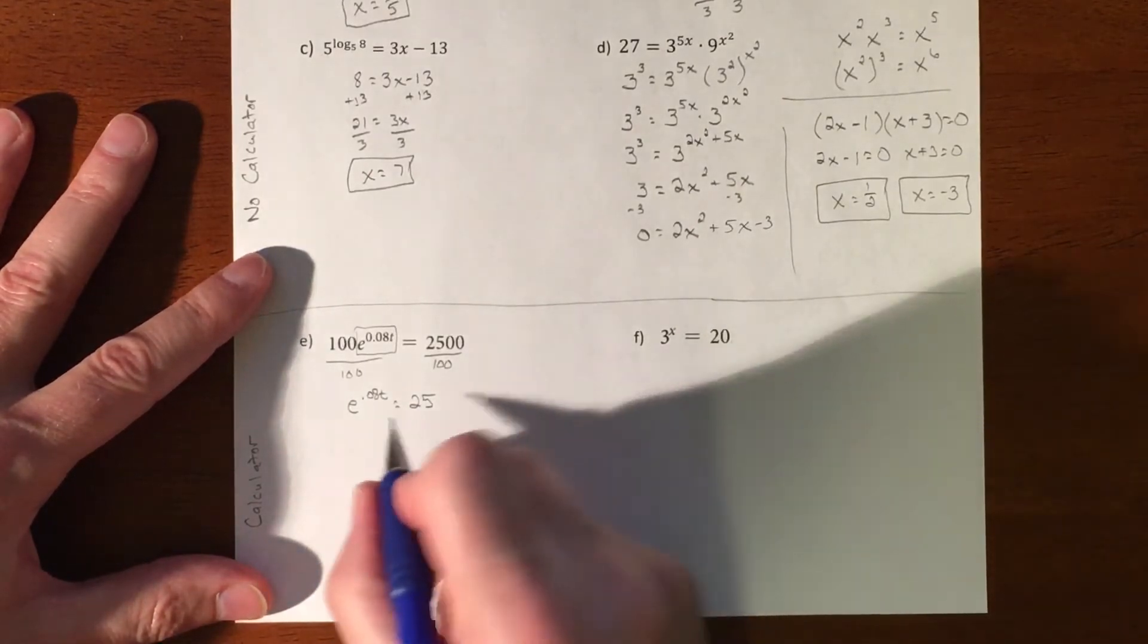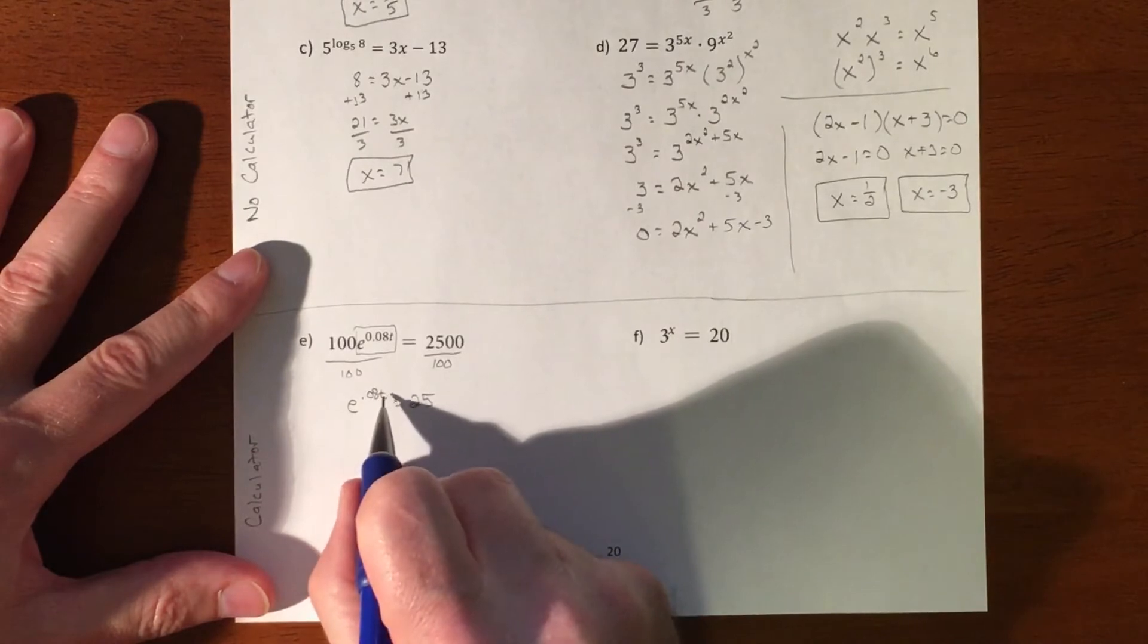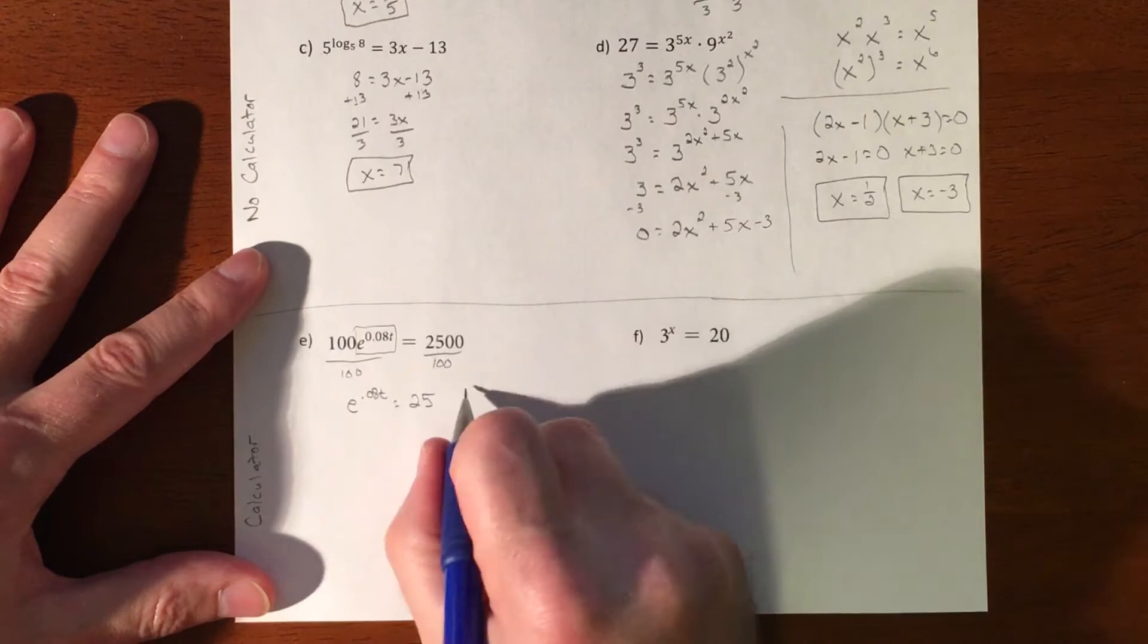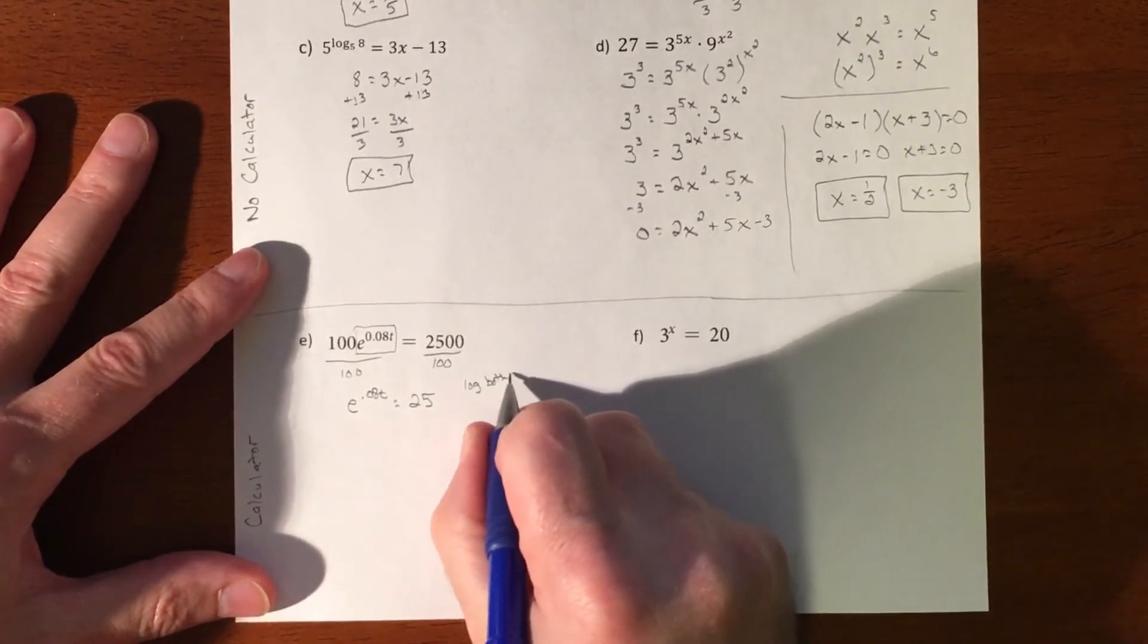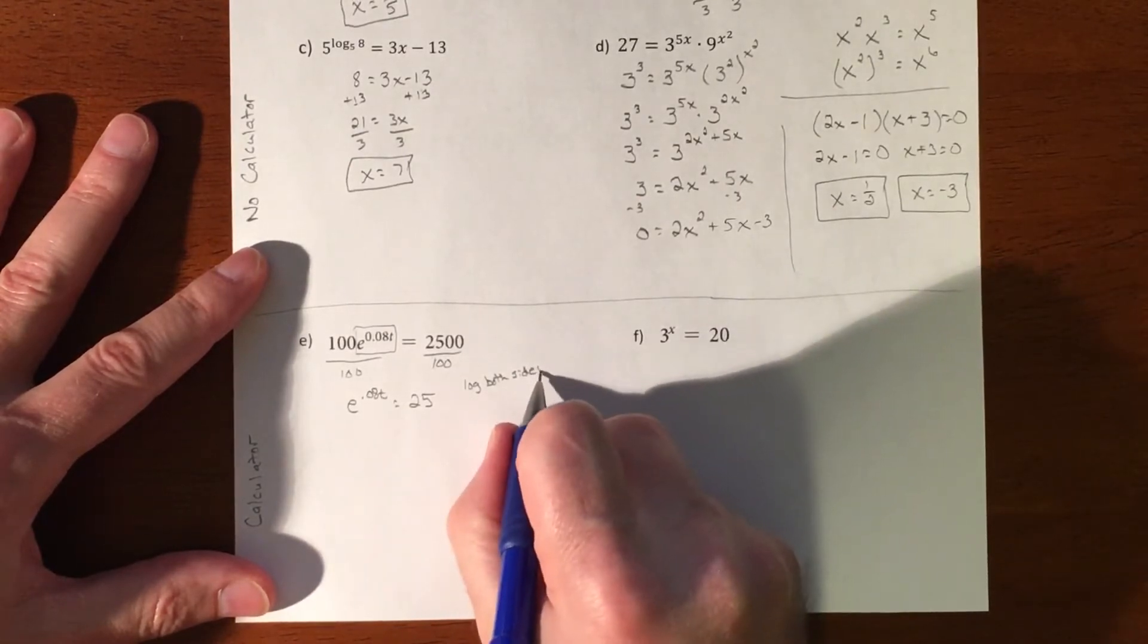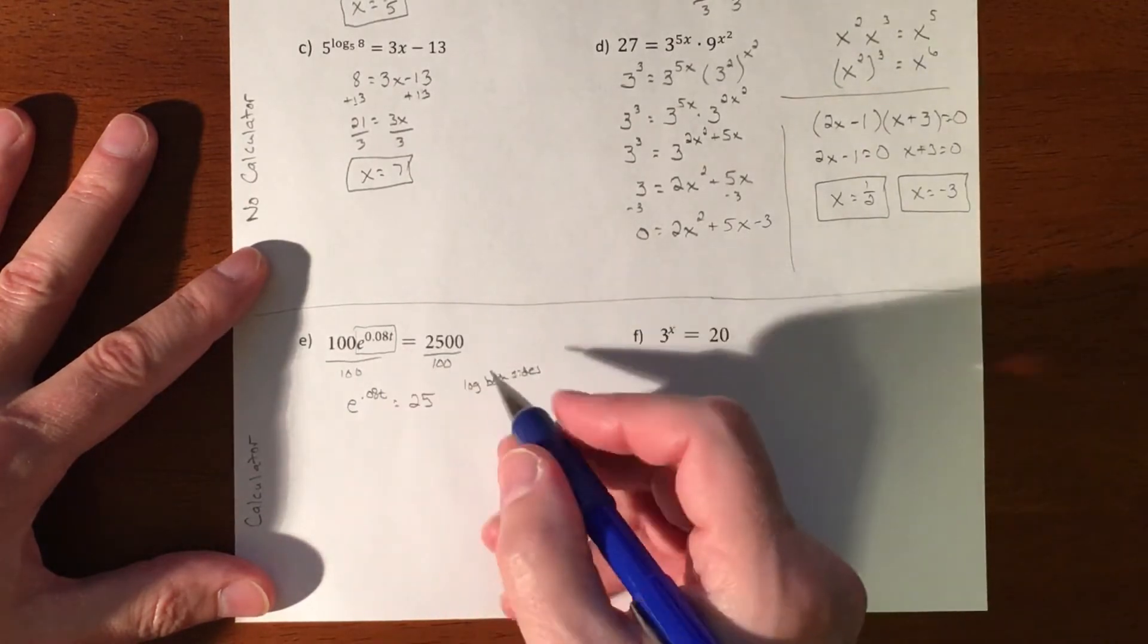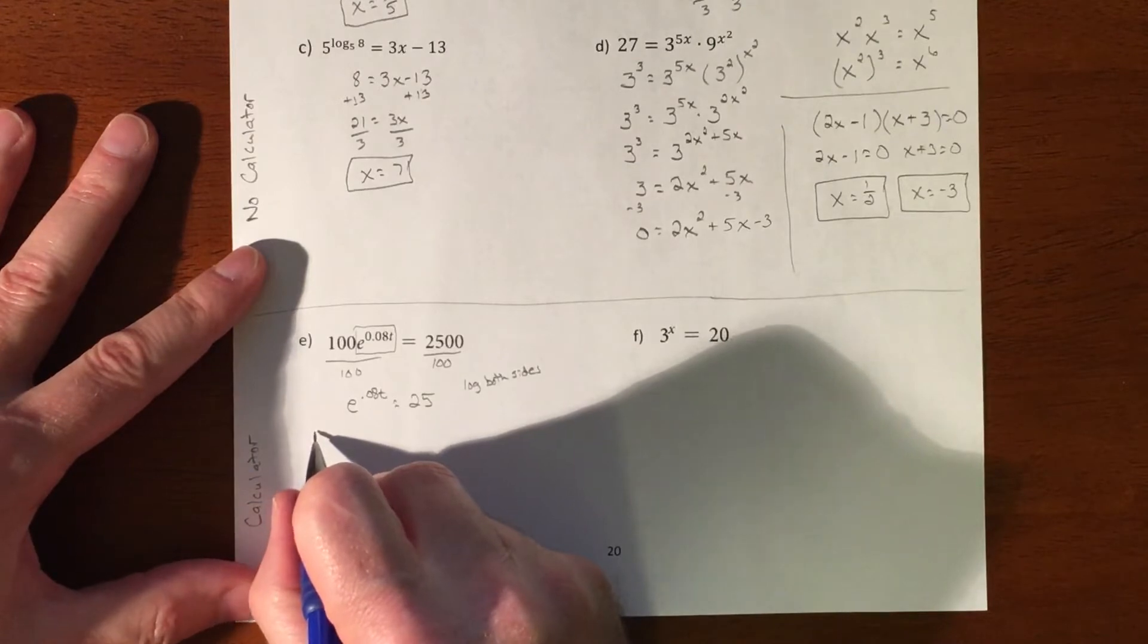All right. So once we have this, the only way to get this exponent out of here, cause it has a variable, we can't like T root it or anything like that. We are going to log both sides. So that's just like square rooting both sides. It's just like dividing both sides. It's just like dividing by a hundred on both sides. As long as you do it to both sides, mathematically, you're not cheating anything.